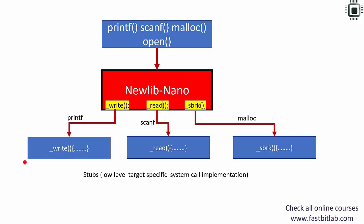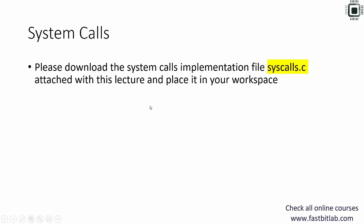You have to provide many system call implementations like write, read, and sbrk. sbrk is called by NewLib when the embedded application executes malloc or dynamic memory management related APIs. I've attached a file called syscalls.c with this lecture. Download that file and place it in your workspace.